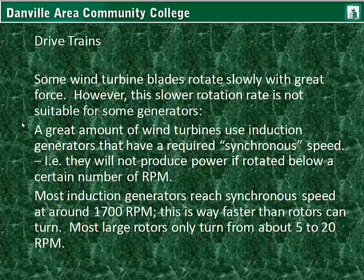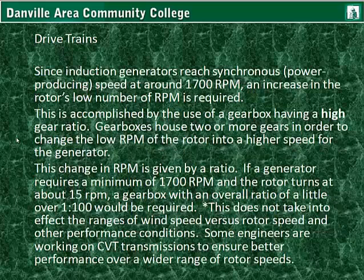Some wind turbine blades rotate slowly with great force — that is to say, torque. However, this slower rotation rate is not suitable for some generators. A great number of wind turbines use induction generators that have a required synchronous speed; they will not produce power if rotated below a certain number of RPM. Most induction generators reach synchronous speed around 1700 RPM, which is far faster than rotors can turn. Most large rotors only turn from about 5 to 20 RPM. Since the induction generator reaches synchronous speed at around 1700 RPM, an increase in the rotor's low RPM is required, accomplished by the use of a gearbox with a high gear ratio.